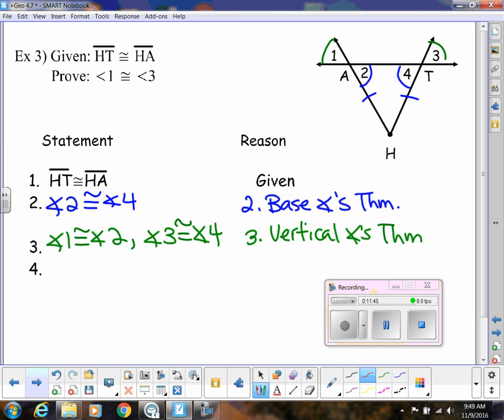So then I would like to add another step, or maybe not another step, but two statements here. So angle 1 is congruent then to angle 4. So I'm replacing this with the angle it's equivalent to. And then from there now, I can see that angle 1 and angle 3 are both congruent to angle 4. So I can say angle 1 is congruent to angle 3 using the transitive property.